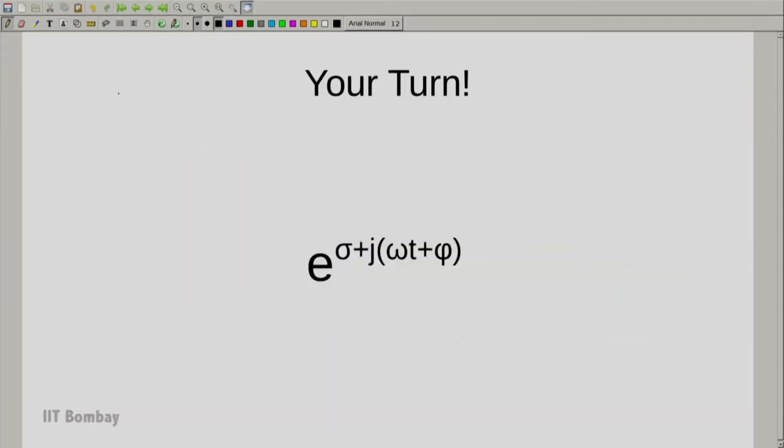We can take it further and I would like you the students of this course to tell me what this plot would look like. So I have e raised to the power of sigma plus j times omega t plus phi. And I want you to tell me what this plot would look like, what would the real part look like, what would the imaginary plot look like, plot some graphs, show it in the forums. And I have some more questions for you.